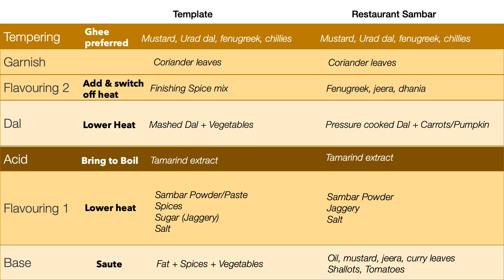In a restaurant, speed is everything, so nobody waits for carrots to cook in tamarind water. They pressure-cook all needed vegetables along with the dal and add it together. Here's where the magic of the finishing spice mix comes in: a restaurant typically has a finishing sambar powder — not the same as the main sambar powder, but a smaller subset of flavors to highlight. Typically fenugreek, cumin, and coriander — some add pepper. You make a powder with this, add it to the sambar, switch off heat, add coriander leaves, and temper.